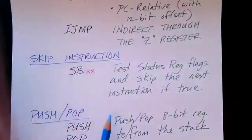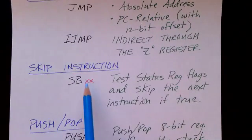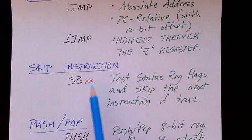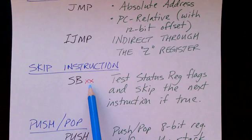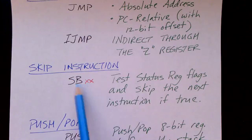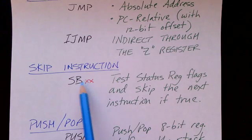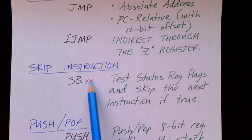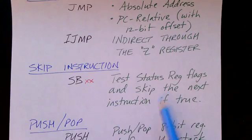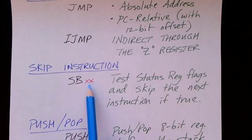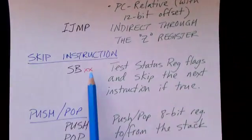There is also a skip instruction, which is somewhat like a conditional branch. It tests the condition code bits in the status register — for example, whether the number is negative — and determines whether to execute the next instruction or skip it. So whether or not the instruction immediately after the skip is executed depends on whether the condition codes match. This effectively allows you to optionally execute a single instruction without the overhead of a branch instruction.